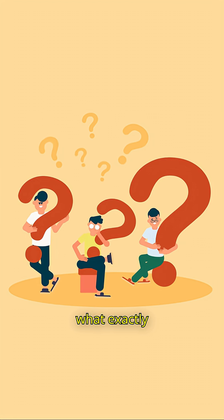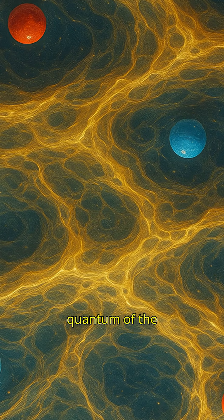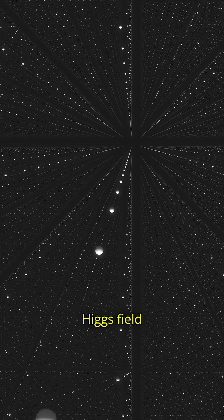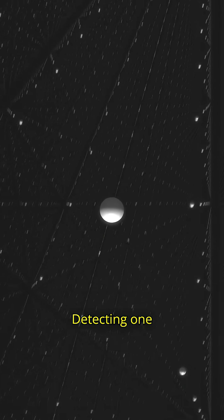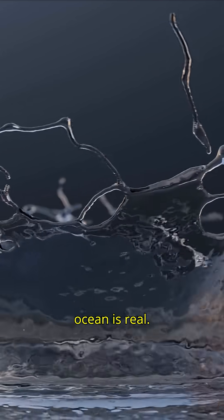But what exactly is this particle? The Higgs boson is the tiniest chunk, the quantum, of the Higgs field. Just like light has photons, little packets of the electromagnetic field, the Higgs field has Higgs bosons. Detecting one is like finding a single droplet and proving the whole ocean is real.